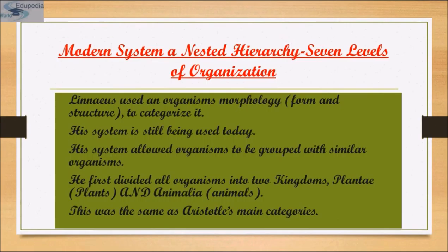The modern system uses a nested hierarchy with seven levels of organization. Linnaeus used an organism's morphology — its form and structure — to categorize it. His system is still being used today. It allows organisms to be grouped with similar organisms. He first divided all organisms into two kingdoms: Kingdom Plantae and Kingdom Animalia.